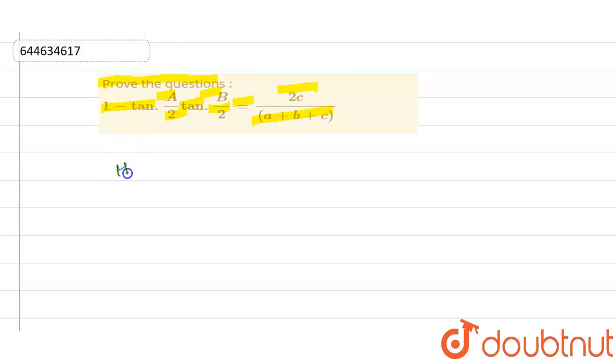Using half angle formula, we get first of all we have taken the LHS, that is left hand side, which is given as 1 minus tan of A by 2 multiplied by tan of B by 2.